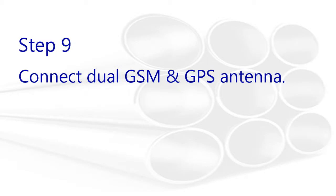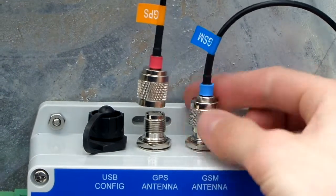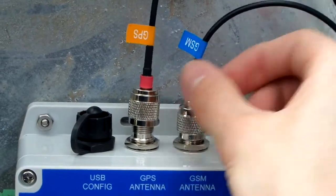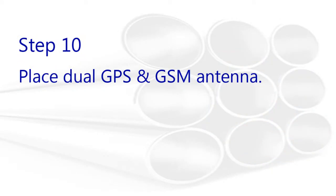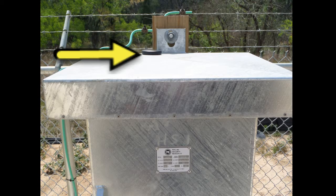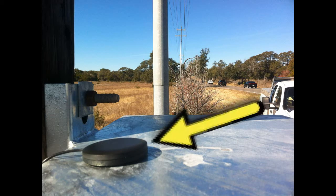Connect the dual GSM GPS antenna. The cable connections are labeled. The dual GSM GPS antenna has a magnetic backing that can be attached to an external metal surface, such as the top of the rectifier, or another location that can provide a clear view of the sky.